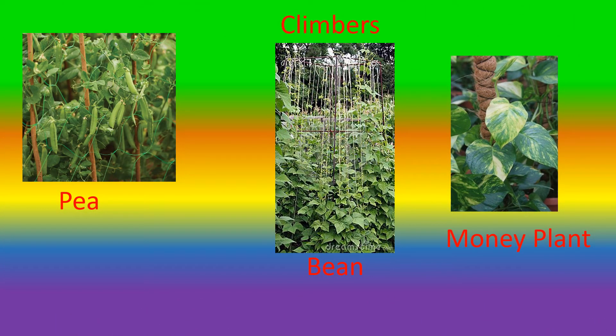Next are climbers. Children, do you know that some plants have weak stems and they need the support of other plants, walls, or sticks to grow upright? These plants are called climbers, like pea, money plant, bean, etc.